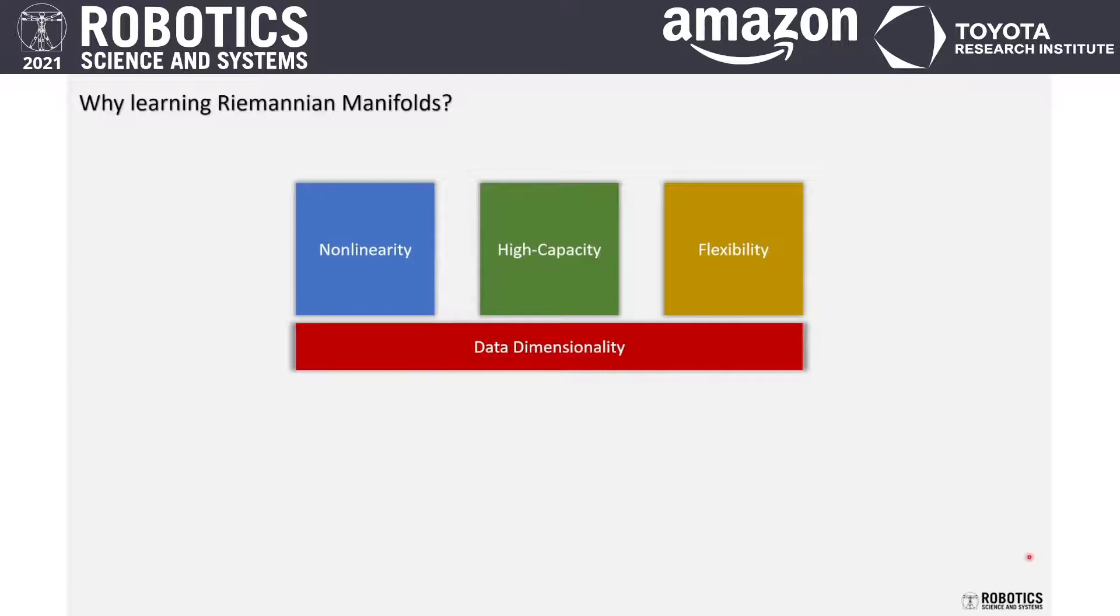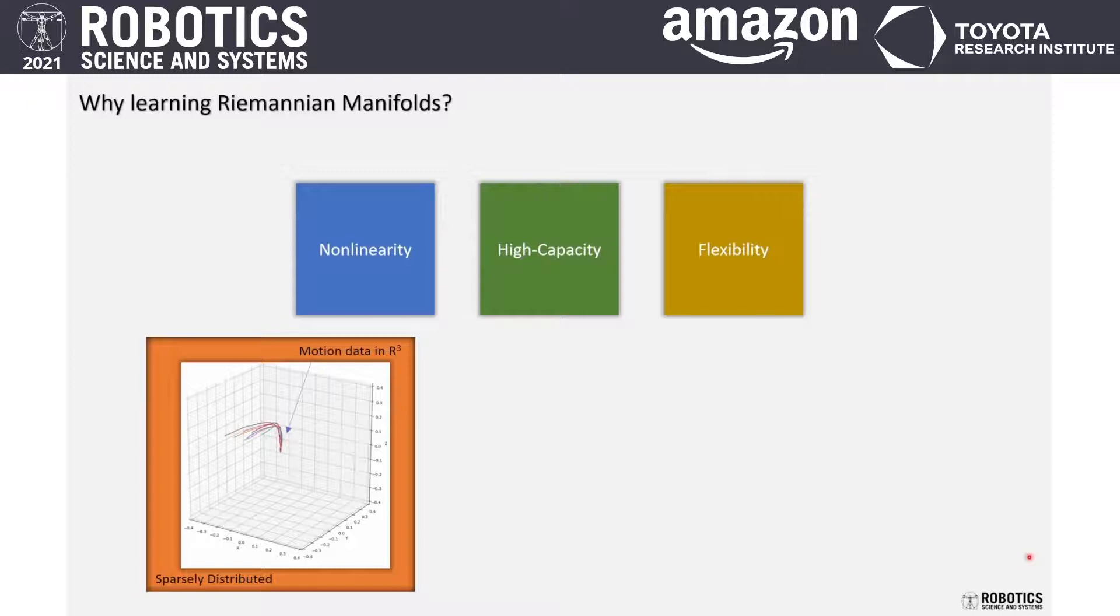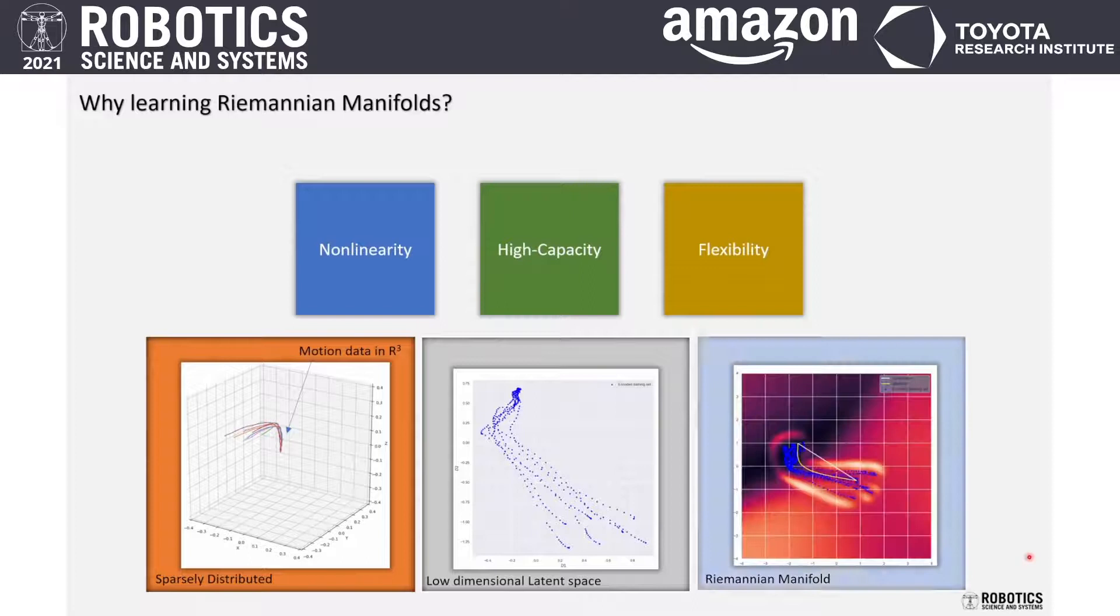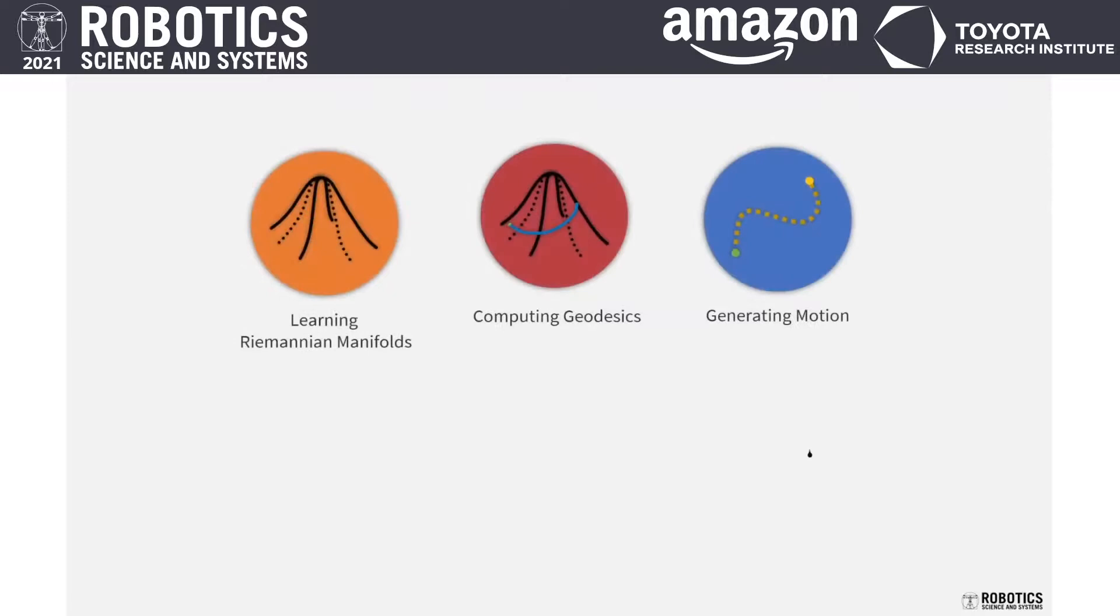But of course, there are problems like high dimensionality, and to deal with this problem, we have to make some assumptions. First, the data is sparsely distributed in the ambient space. The data lies on a manifold in a lower-dimensional latent space, and this manifold is actually a Riemannian manifold.